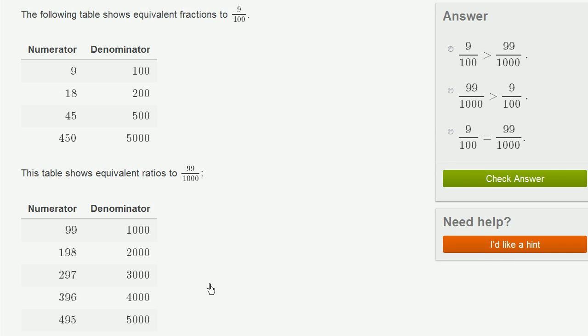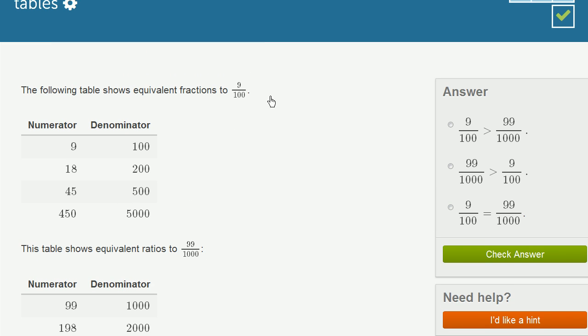This actually isn't so hard to compare even without the tables. You could multiply the numerator and denominator by 10 and you'd get 90 over 1,000. Comparing that to 99 over 1,000, 90 over 1,000 is clearly smaller. So 9 over 100 is less than 99 over 1,000.